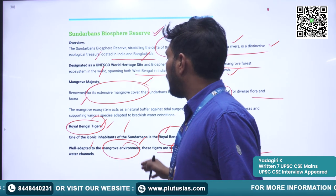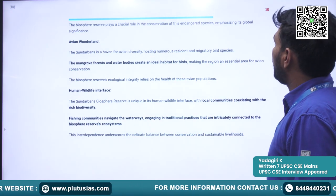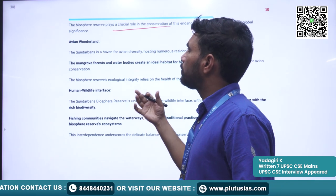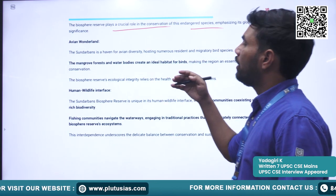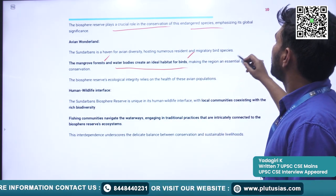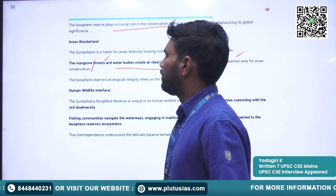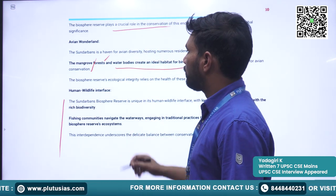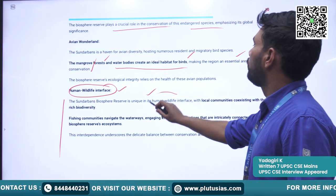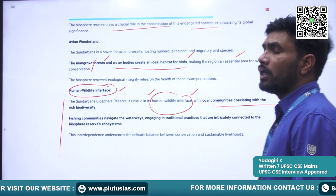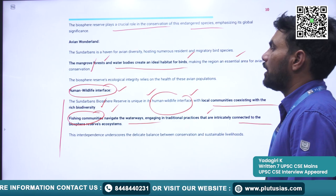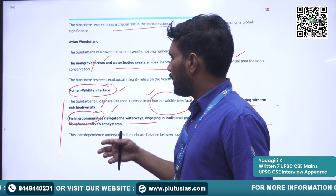The Royal Bengal Tiger is well adapted to this particular mangrove ecology. The biosphere plays a crucial role in hosting various endangered species. The mangrove forests and water bodies create an ideal habitat for birds, making the region an essential area for avian conservation. The biosphere reserve is also a great example of human-wildlife interface, with local communities coexisting with the rich biodiversity.